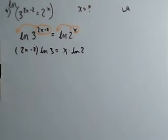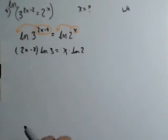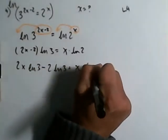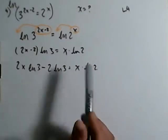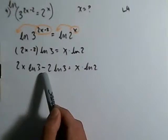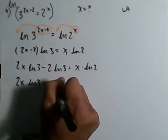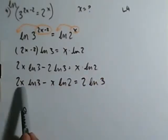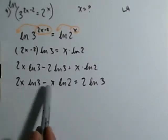So what do we do from here? We're going to have to distribute, because you have an x on both sides. Distribute: 2x times natural log of three minus 2 natural log of three equals x times natural log of two. Then bring the x term to the left side and the constant term to the right side. Subtracting x times natural log of two and adding 2 times natural log of three: 2x·ln3 minus x·ln2 equals 2·ln3.